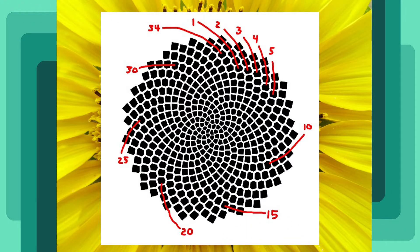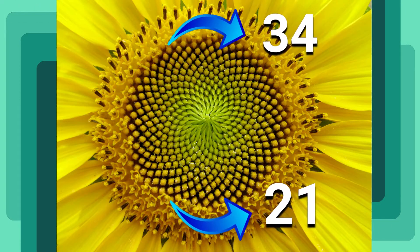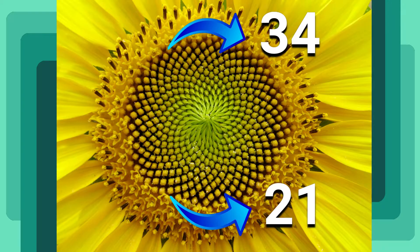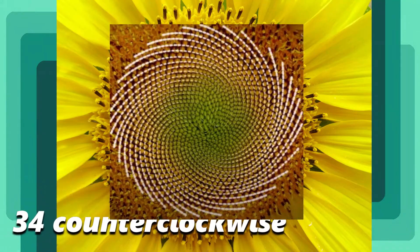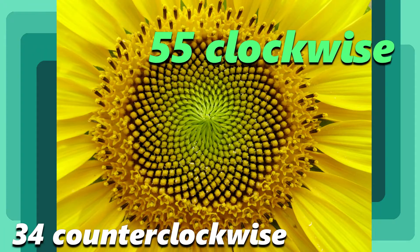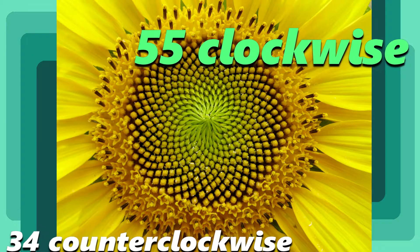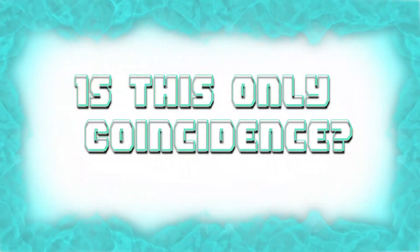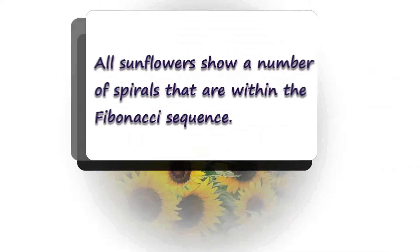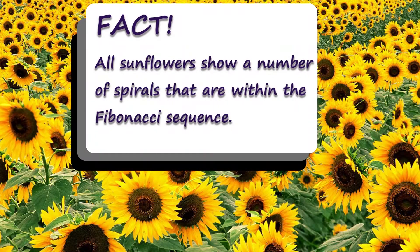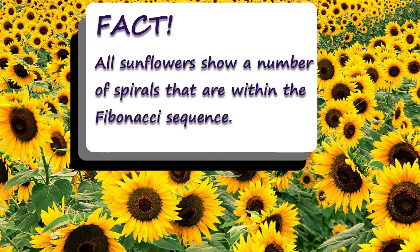Surprisingly, the numbers 21 and 34 are consecutive Fibonacci numbers. Other sunflowers have 34 number of counterclockwise spirals and 55 clockwise spirals. Do you think this is just coincidence? No, in fact all the sunflowers in the world show a number of spirals that are within the Fibonacci sequence.